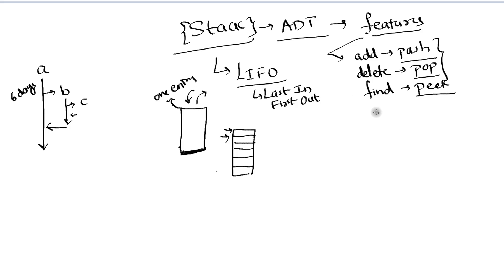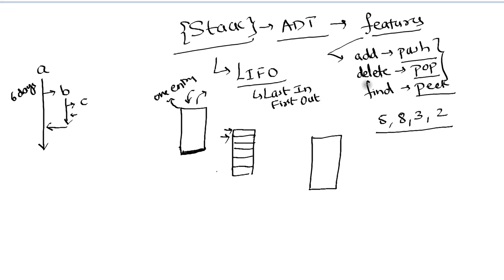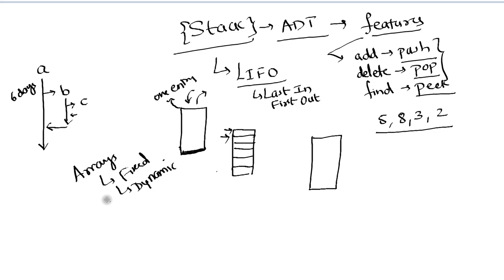Let's understand how we work with elements. Say I want to store four elements: 5, 8, 3, and 2 in a stack. Using push you can insert the value, using pop you can get and remove the last value, and using peek you can see the top value without deleting it. There are multiple ways to implement this — with a fixed-length array, a dynamic-length array, or a linked list.